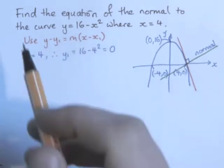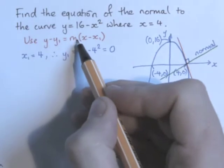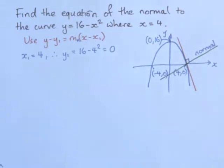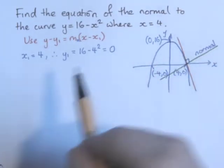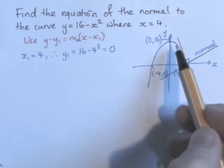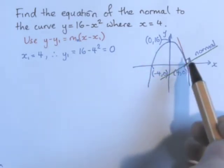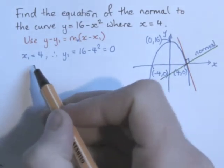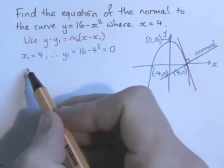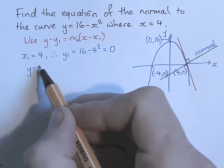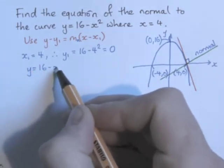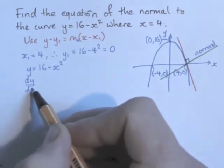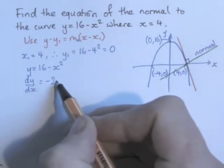I'm going to put a little subscript of n for the gradient of the normal. What we're going to do is differentiate the equation of the curve to find the gradient of the curve at this point, as a stepping stone to getting the gradient of the normal. So y is equal to 16 minus x squared. So therefore, dy/dx will be minus 2x.